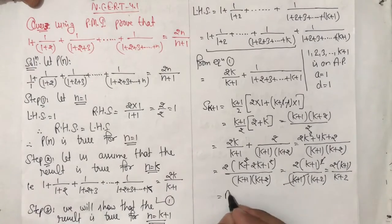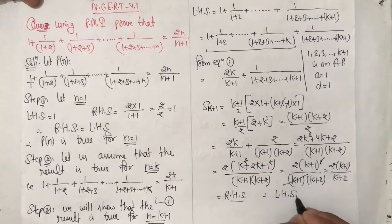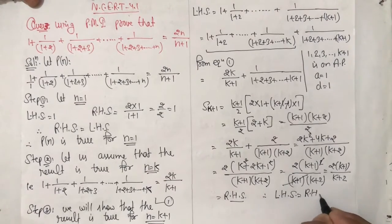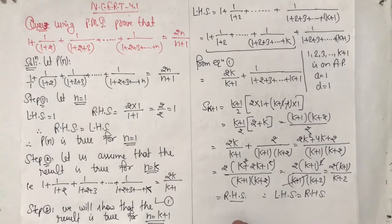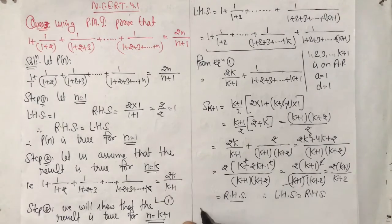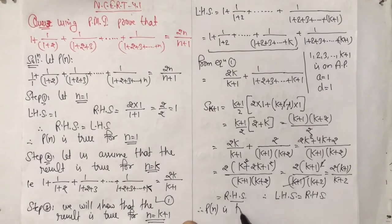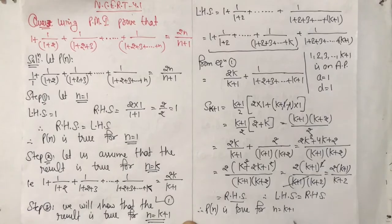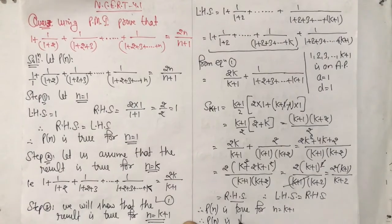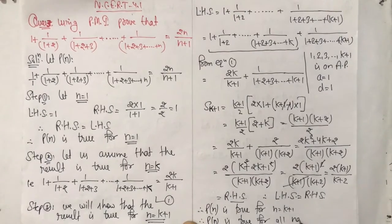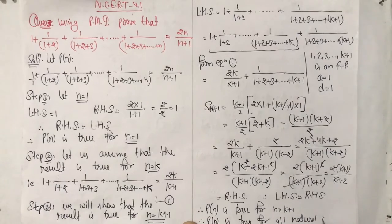And this is exactly our RHS for n equal to k plus 1. Therefore, LHS is equal to RHS for n equal to k plus 1. Therefore, P(n) is true for n equal to k plus 1. Therefore, P(n) is true for all natural numbers. Hence proved.